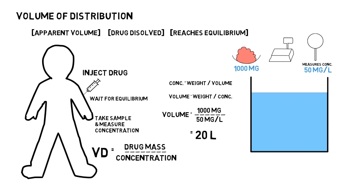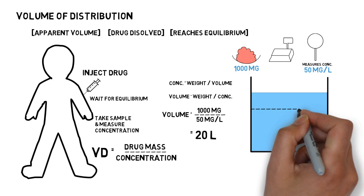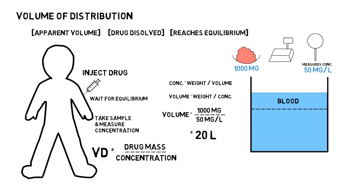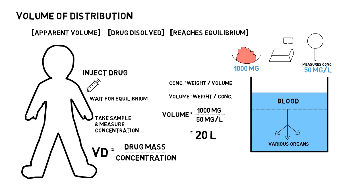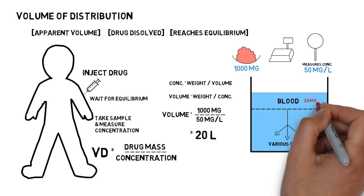Unfortunately, there's a problem that can happen in a human being unlike the container. When you inject the drug, the drug reaches the blood, and from the blood it's always possible that the drug could go into different organ systems — it could go into the liver, the brain, the lungs, or anywhere. Because of this there will be a slight fall in the concentration in the blood, because the drug is reaching into different organs. Because of that, and the fact that we measure concentration from the blood, we will estimate a different volume of distribution. Let's say my final concentration found in the blood is 20 mg per liter.